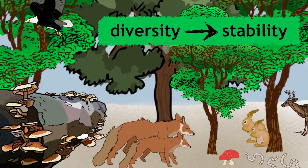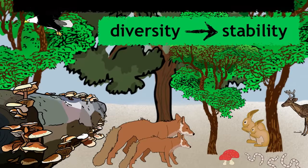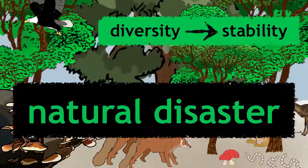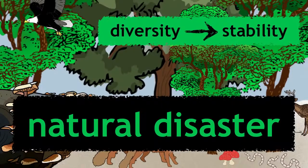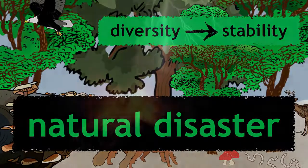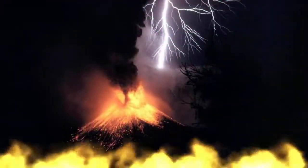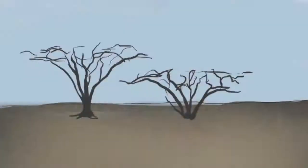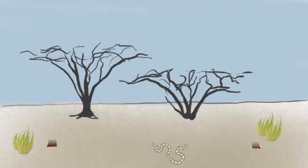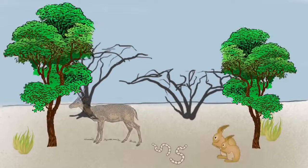Sometimes, the only event that will alter these ecosystems is a natural disaster, such as an earthquake, a volcanic eruption, or even a large-scale fire. Worry not, though — ecosystems recover over time.